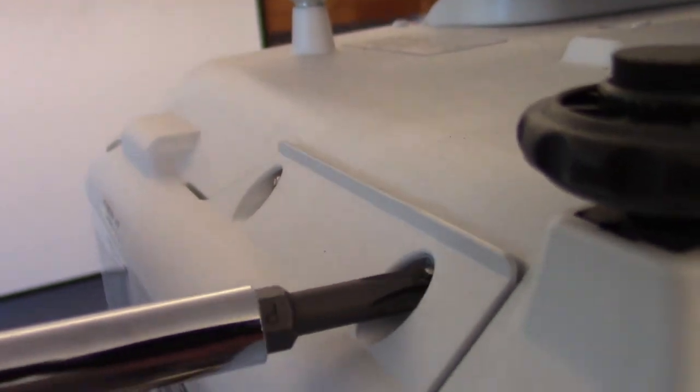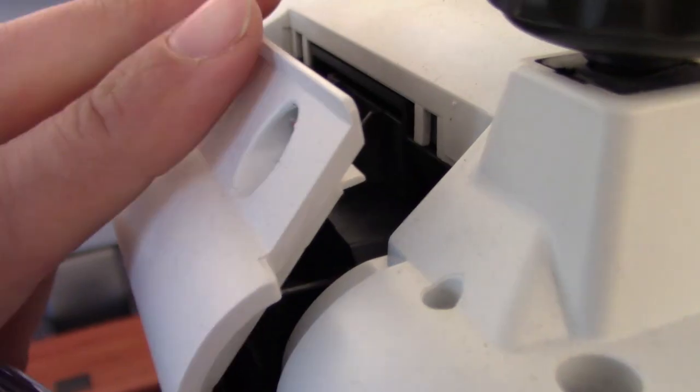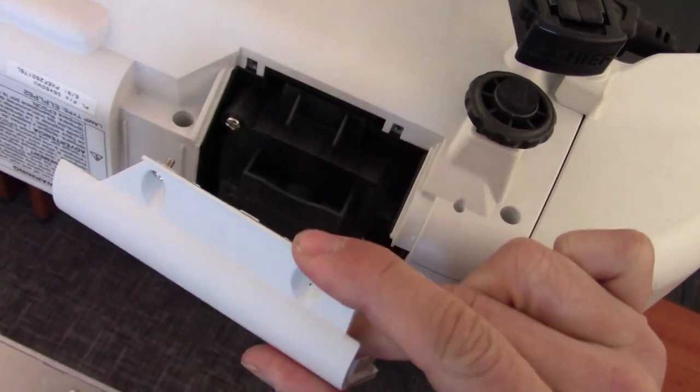You're going to want to unscrew the side panel, and underneath that panel you'll see the bulb, and you can just let the side panel kind of hang, because it does have a strap that keeps it from falling.